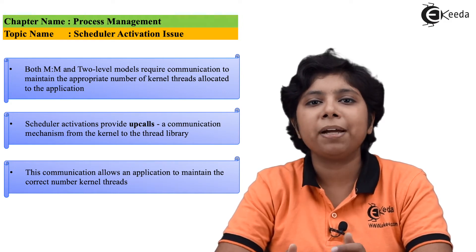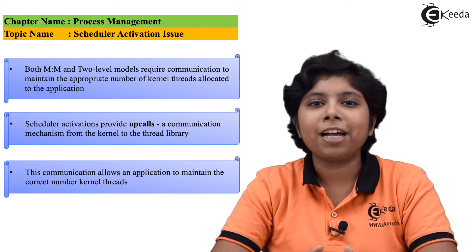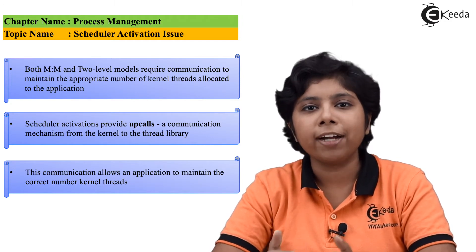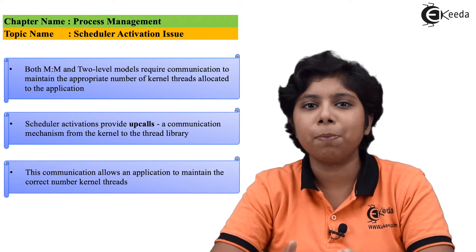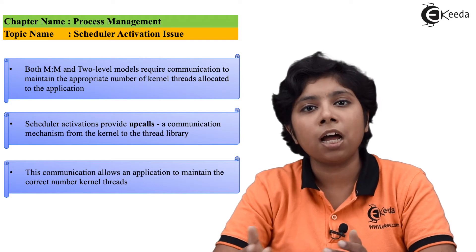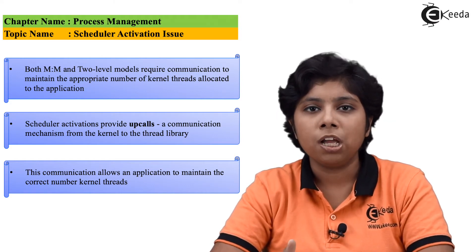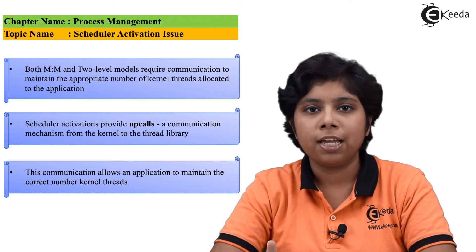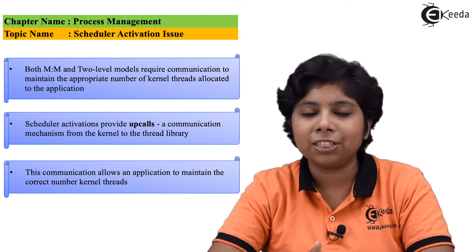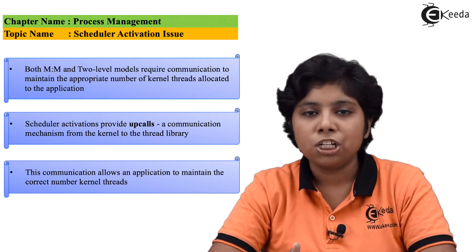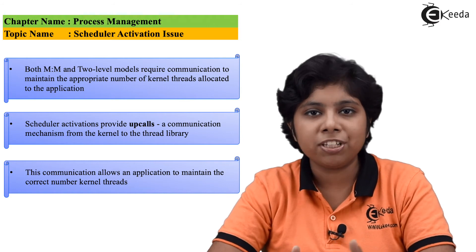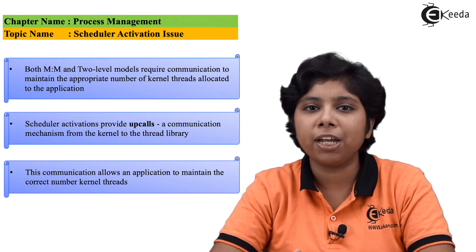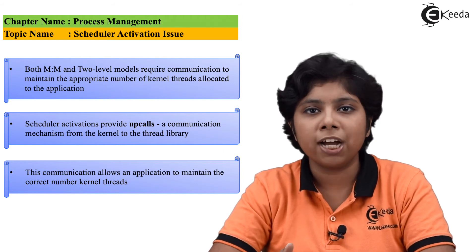The upcall handler relinquishes the previous virtual processor by deallocating all the blocking threads. The kernel then makes another upcall to give the process a new virtual processor, where the blocking thread is replaced by a new thread available from the thread pool. When the event that the blocking thread was waiting for finishes, the kernel makes another upcall to inform the application that the blocking thread is now eligible to run. To run this previously blocking thread, the kernel makes another upcall to produce a new virtual processor, or it can preempt a running thread's virtual processor to run the application.